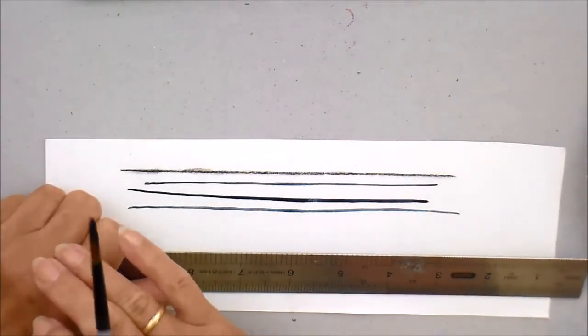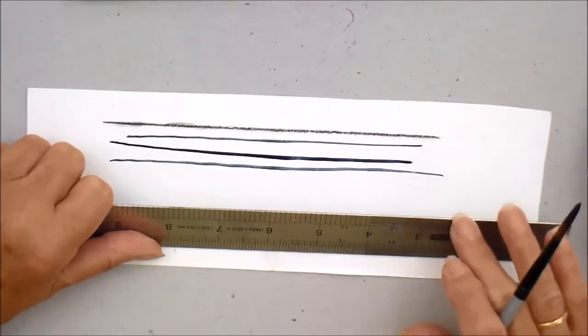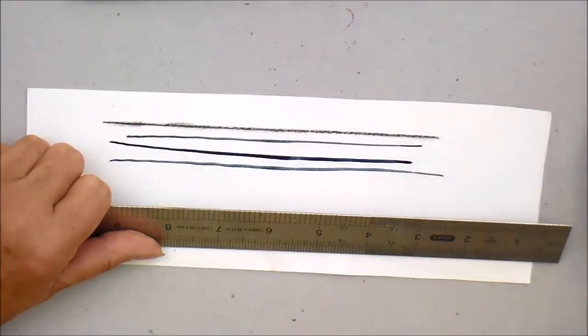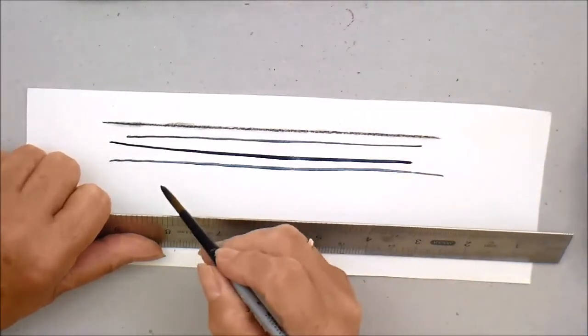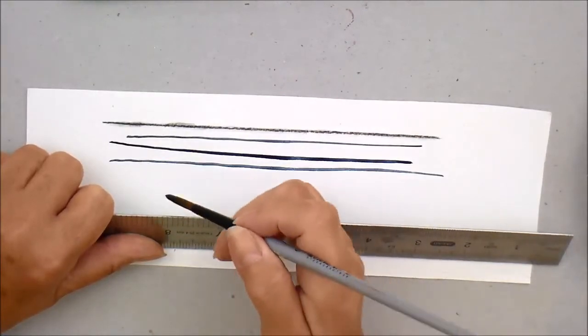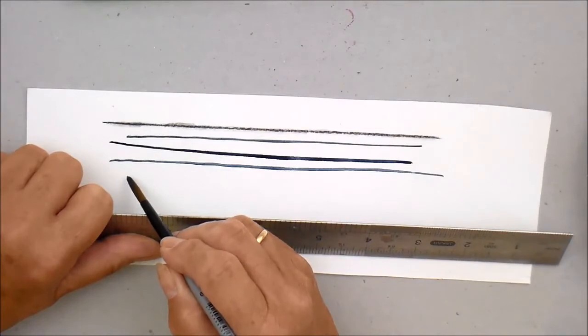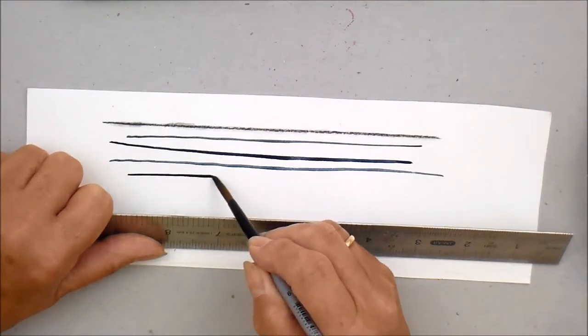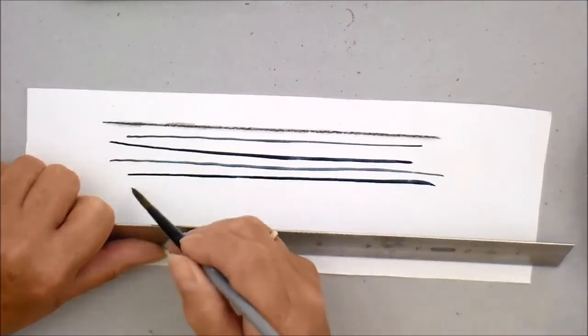And that hand is solid on the paper, so that isn't really going to move very much. You then take your paintbrush, get some paint on it. You rest the ferrule, that's the metal part of the paintbrush, onto that edge and then you just slide your brush across it.